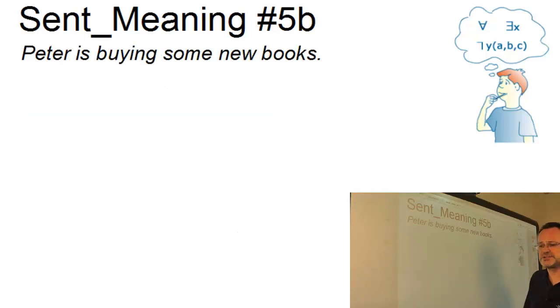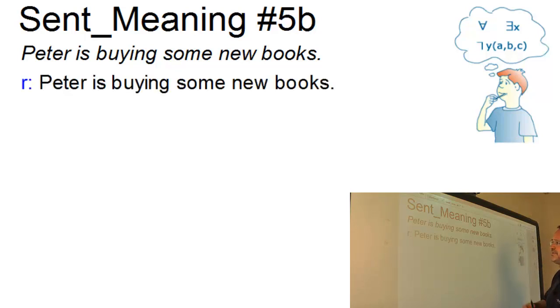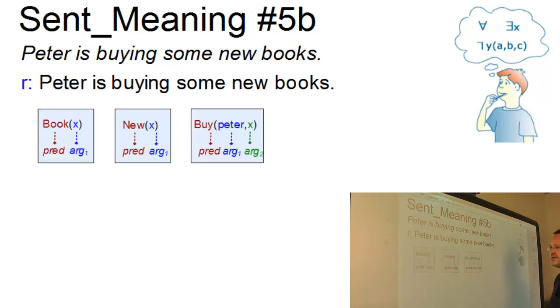In our second example, we have a similar case where a simple proposition, Peter is buying some new books, can be broken up into three predications. x is a book, x is new and Peter buys x. And again, all these predications involve a variable for a quantifier to operate on.